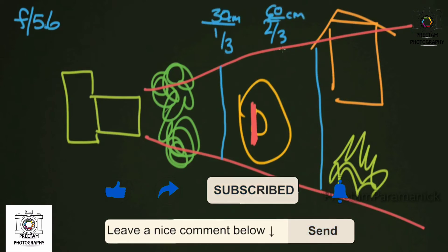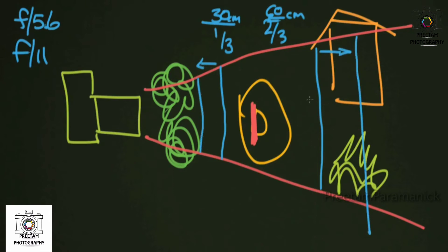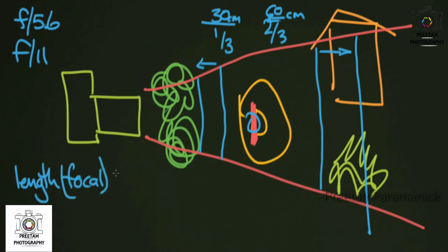That one-third to two-third relationship stays the same as you increase the f-stop — for example moving up to f11. The lines defining that zone simply move forward by one-third and back by two-thirds, with the focus point staying on your subject's face. Things that affect depth of field include focal length — sometimes called your zoom — your f-stop, and your distance to your subject.